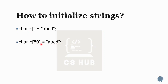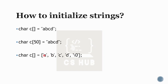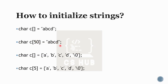Another method: array c of 50 is equal to a, b, c. You can also initialize using single character values a, b, c, d. The last type requires the null character to be added. We have to reserve the size. These are some methods for initializing strings.